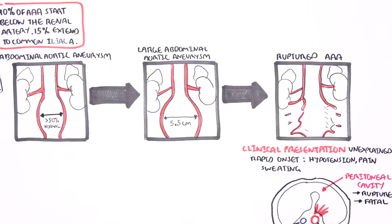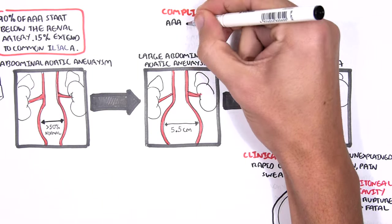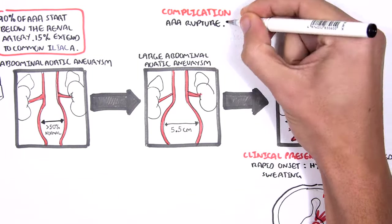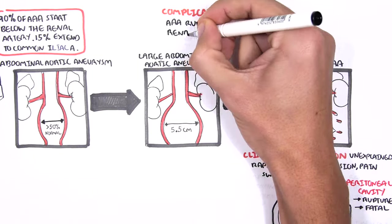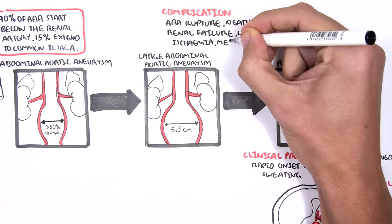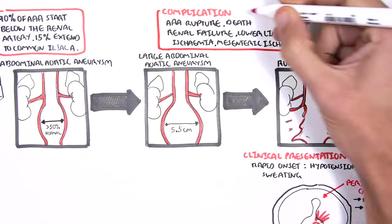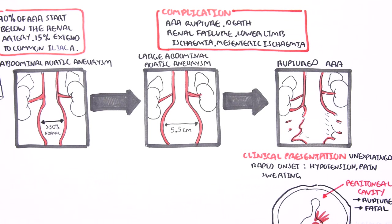Other complications of AAA, aside from rupturing, include death, renal failure because of decreased blood flow to the kidneys, lower limb ischemia, and mesenteric ischemia. All of this is a result of decreased blood flow to the area and loss of blood.